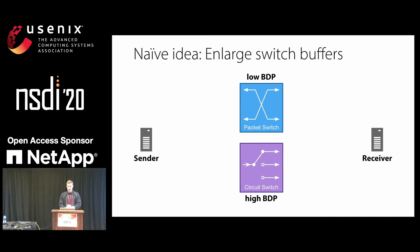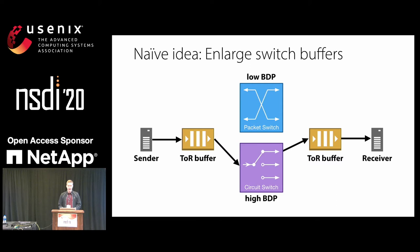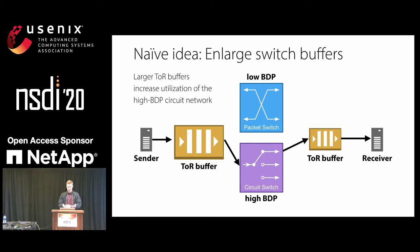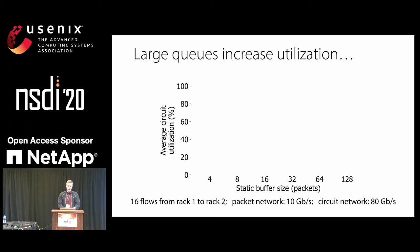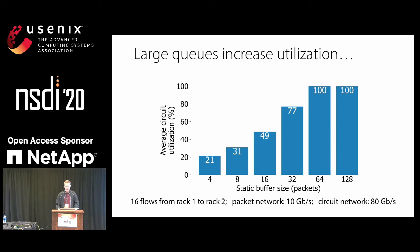Let's visualize this in a reconfigurable DCN setting. We have a sender and receiver communicating over a low-bandwidth-delay-product packet network and a high-bandwidth-delay-product circuit network, with top-of-rack switches and queues in between. If we increase those top-of-rack switch queues, we build up more packets in advance of the circuit, leading to higher utilization — good for bandwidth. However, when we switch back to the packet network, all those extra packets in the queue really hurt latency.